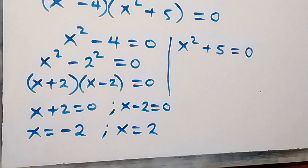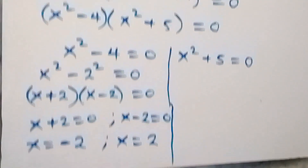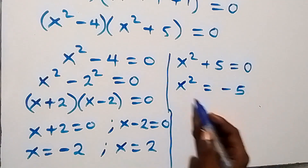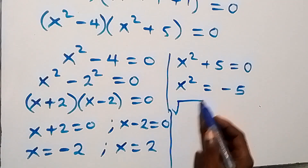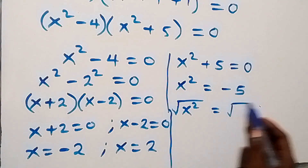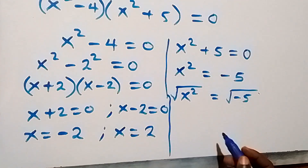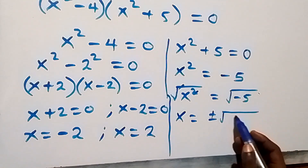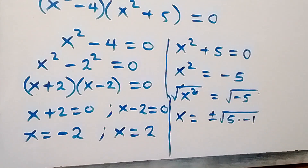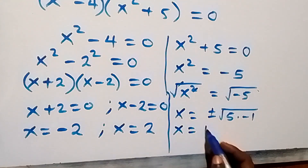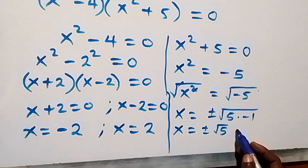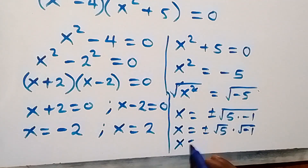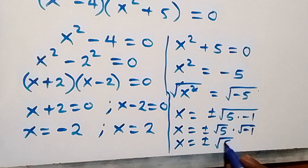For the second case, x squared plus 5 equals zero. Taking 5 to the other side gives x squared equals minus 5. Taking the square root of both sides: x equals plus or minus the square root of minus 5, which we can write as plus or minus root 5 times root of minus 1. Since root of minus 1 equals i, we get x equals plus or minus root 5 times i.